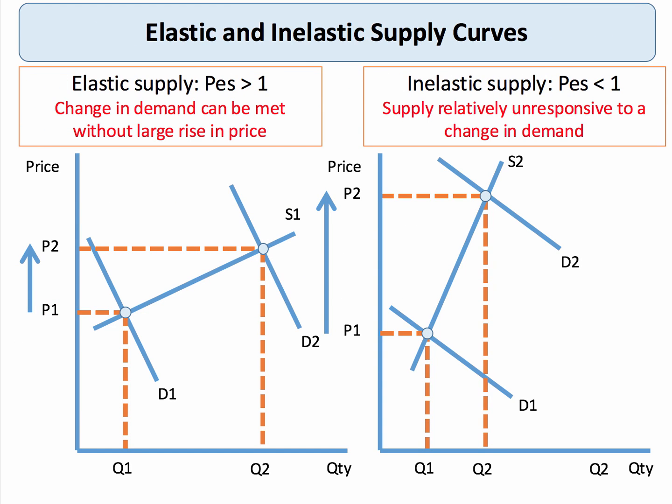How do we show this on a diagram? Looking at the diagram on the right-hand side, you can see a big shift in demand from D1 to D2, but supply is relatively unresponsive to the change in demand. As a result, there's a big increase in price but a relatively small increase in quantity.